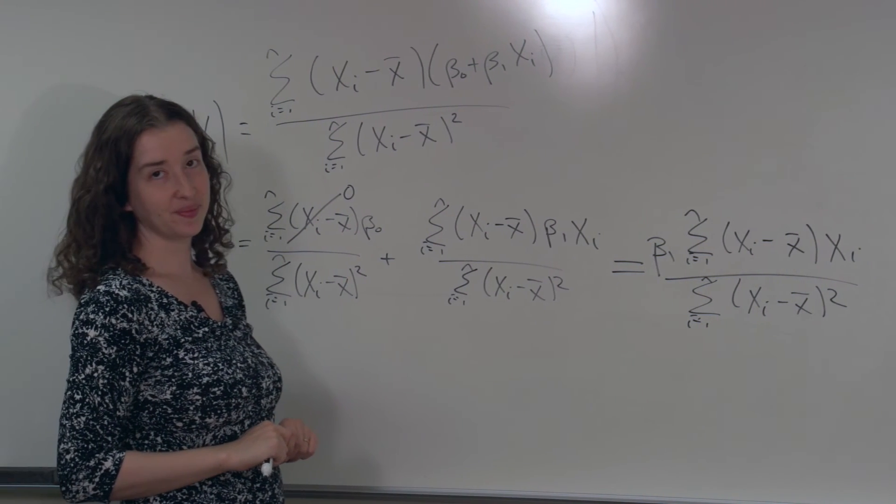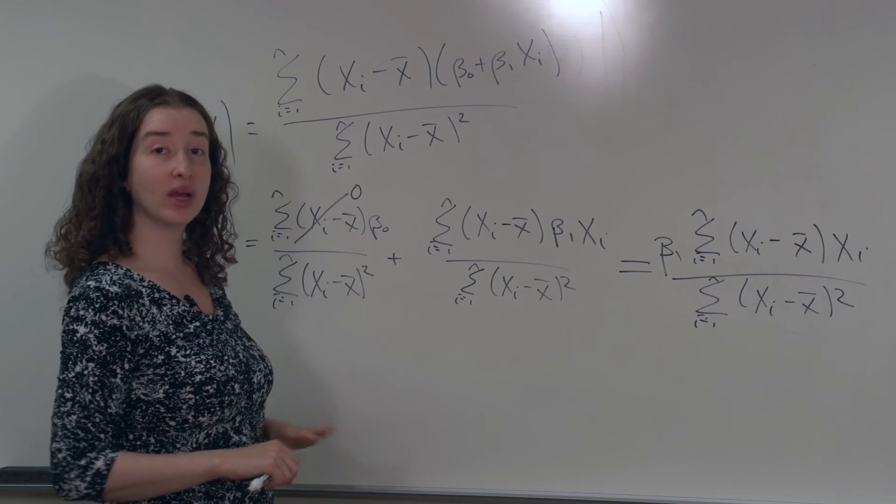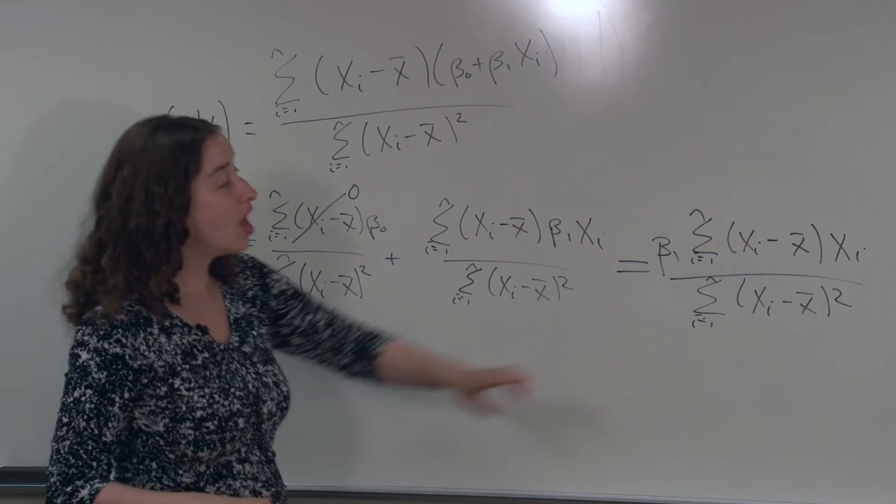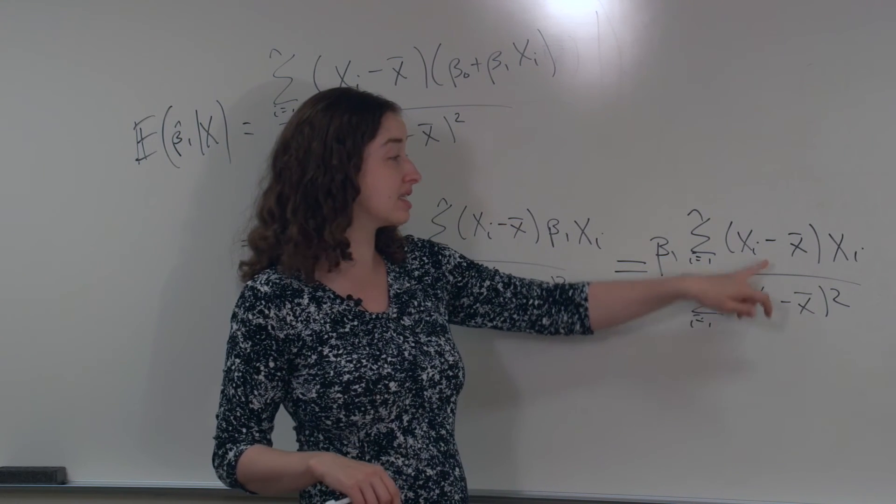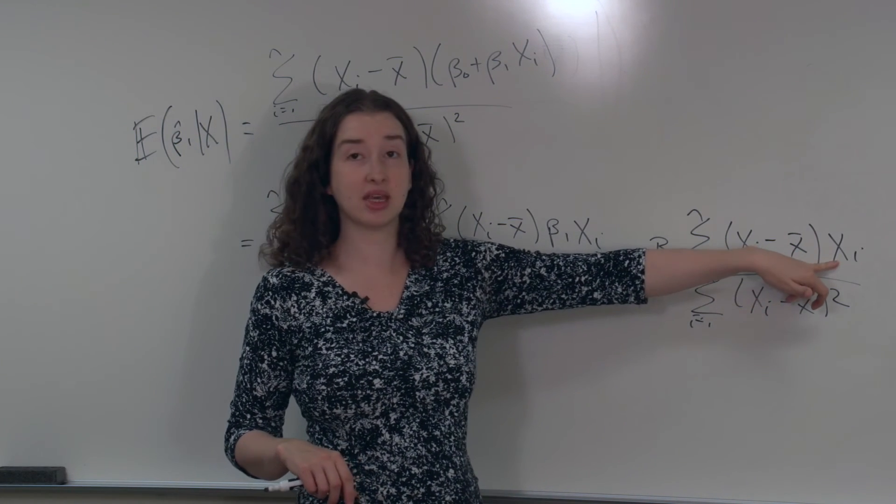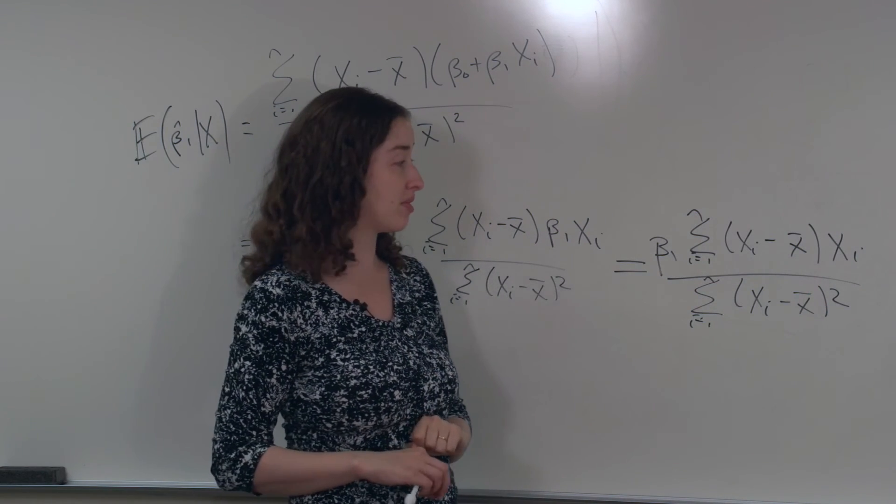I claim that we're done. Why do I get to claim that? Think back to the set of equations we wrote initially. Another way to write the sum of xi minus x-bar squared is the sum of xi minus x-bar times xi. This numerator is the same as this denominator, it's just another way to write the same thing.